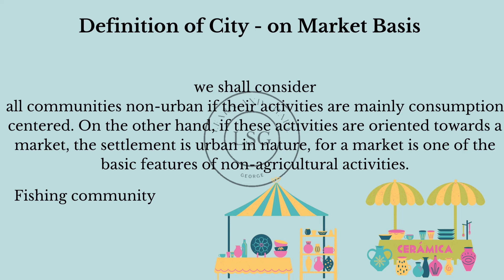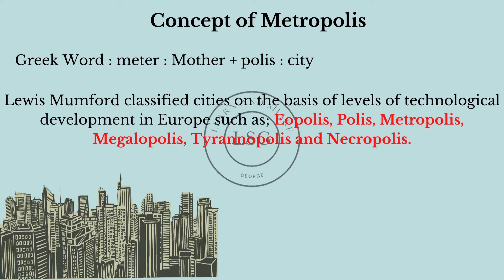Now let's see what metropolis is. Metropolis is a Greek word derived from 'meter' plus 'polis' — meter means mother and polis means city. Lewis Mumford classified cities on the basis of levels of technological development in Europe, such as eopolis, polis, metropolis, megalopolis, tyranopolis, and necropolis.